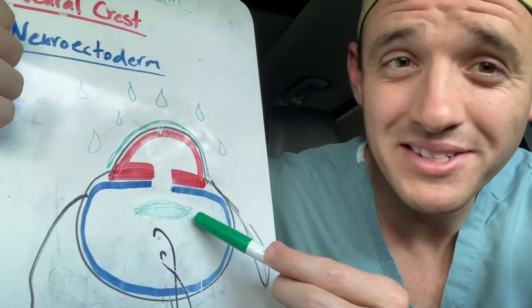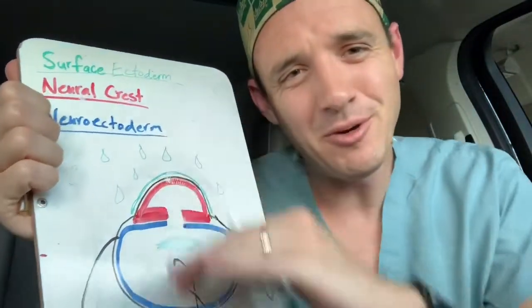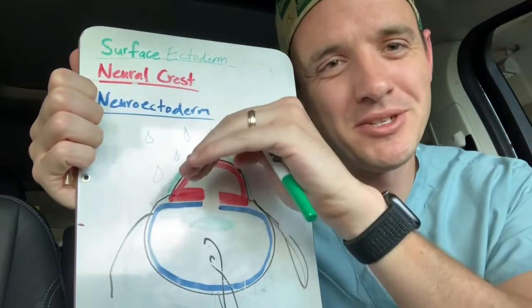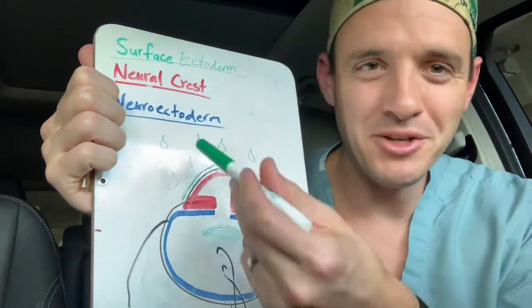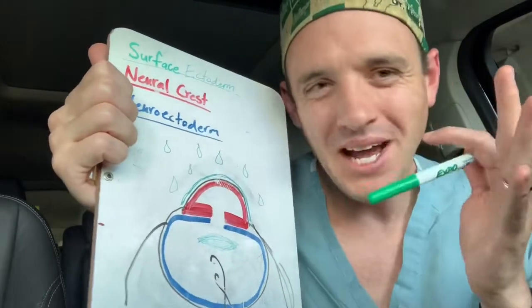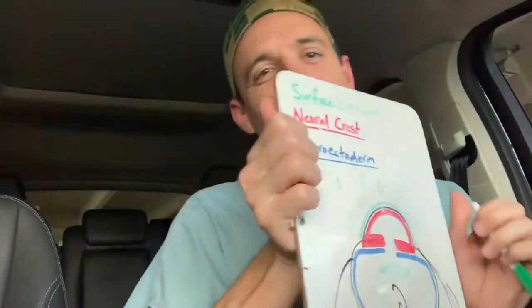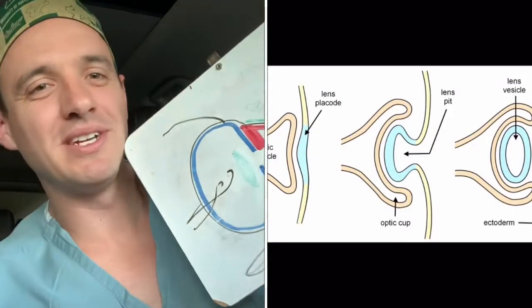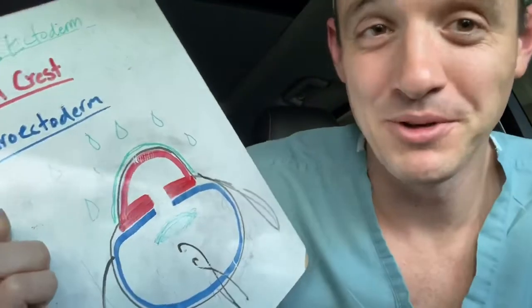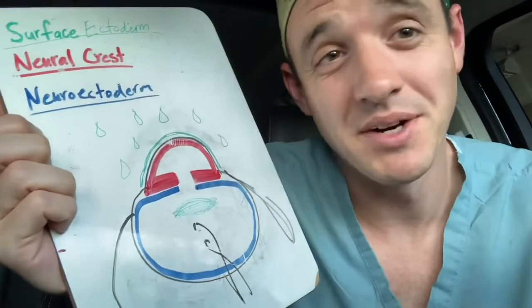And then you've got the lens. The lens sort of messes up the layering — surface ectoderm is on the surface, neuroectoderm is in the back, and neural crest is in the middle. But if you remember anything from that animation of the embryologic origin of the eye, you probably hold on to that one picture of the optic vesicle capturing some of the surface ectoderm to form the lens. The lens is made up of surface ectoderm.